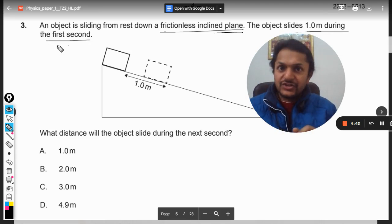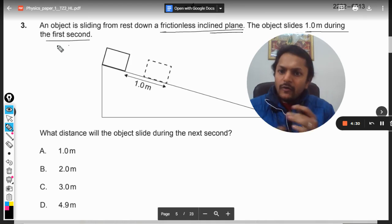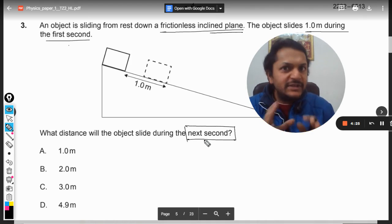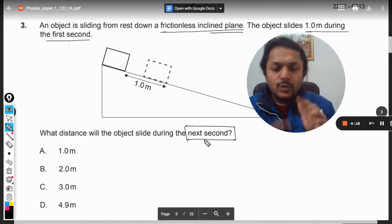There is no friction, there are no dissipative forces, so obviously the body will start sliding under the effect of gravity. It is given that in the first second, it is traveling one meter distance. What distance will the object slide during the next second? So two seconds have been spent, but the question is not what is the total distance in two seconds - the question is what is the distance traveled in the next second.